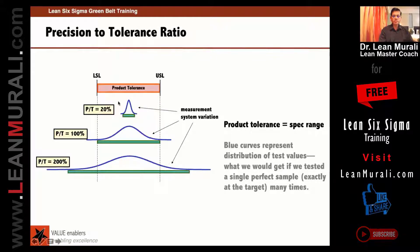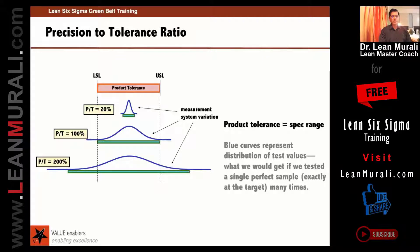The blue curves represent the distribution of the test values. And we would get, if tested, a single perfect sample exactly at the target many times. All you have to understand is it should be less than 10 percent.